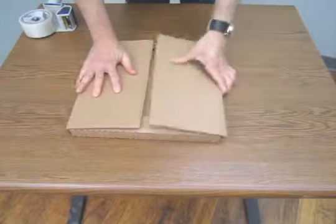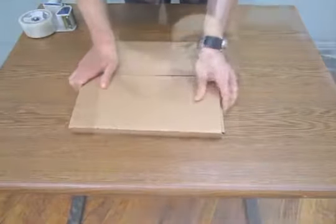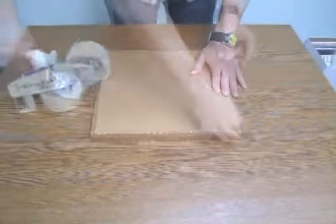Next, fold the flaps over tightly ensuring that there are no exposed openings in the corners. Seal with tape and write all the necessary information on the front.